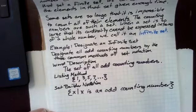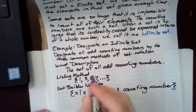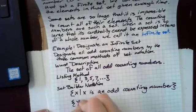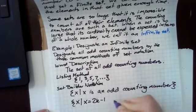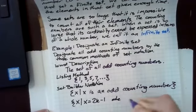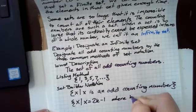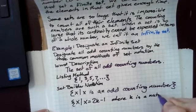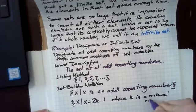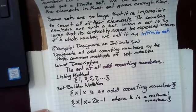But there are other ways we can write this set. For example, we could say this is the set of X such that X equals 2K minus 1, where K is a natural number. Because 2K has to be an even natural number, and if we subtract one from that, we'll have an odd natural number, which is an odd counting number.